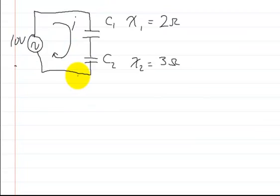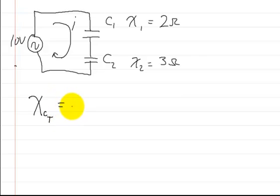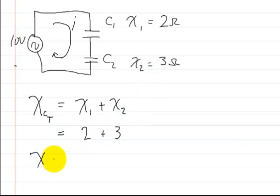Now let's try one where they're in series. In this problem, we have the capacitors in series, and we want to find out what the current is going through these two capacitors. Before we can solve for the current, we need to find the total impedance. Since you add the reactances just like regular resistors, the total reactive capacitance is going to be equal to X1 — the reactance of the first capacitor — plus the reactance of the second capacitor. So that's 2 ohms plus 3 ohms, giving a total capacitive reactance of 5 ohms.